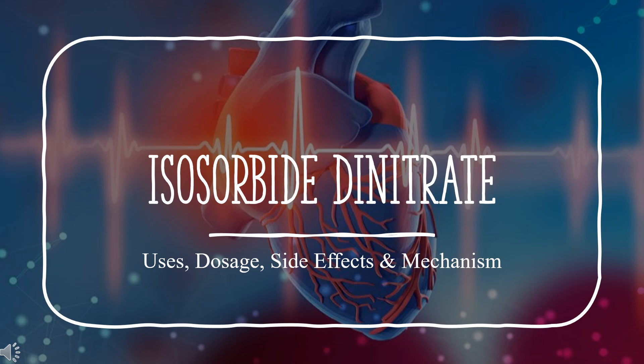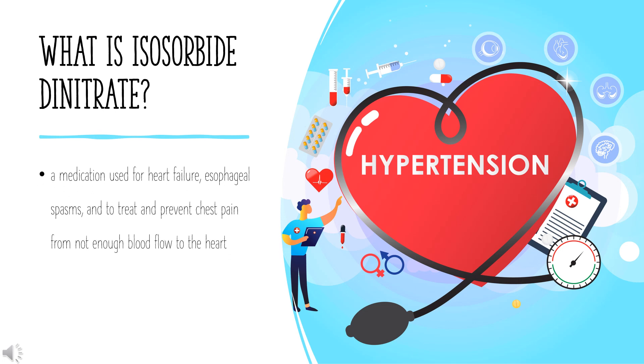Isosorbide dinitrate is a vasodilator used to treat angina in coronary artery disease. It is a medication used for heart failure, esophageal spasms, and to treat and prevent chest pain from not enough blood flow to the heart. It has been found to be particularly useful in heart failure due to systolic dysfunction together with hydralazine. It is taken by mouth or under the tongue.